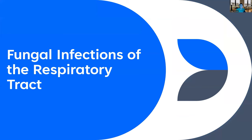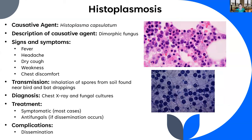Now let's move on to fungal infections of the respiratory tract. First is histoplasmosis, caused by a dimorphic fungus called Histoplasma capsulatum. Here's what a fungal culture looks like in someone with histoplasmosis, and here's what it looks like in the wild.